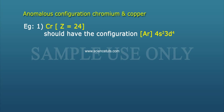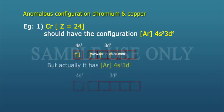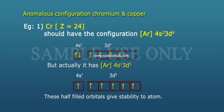Example 1: Chromium, atomic number Z equals 24. It should have the configuration [Ar] 3d⁴ 4s², but actually it has [Ar] 3d⁵ 4s¹. This configuration gives half-filled orbitals, which provide stability to the atom.